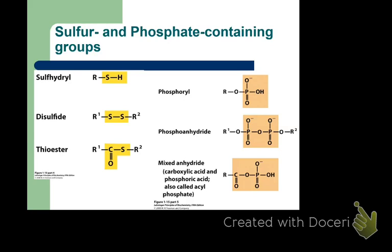Now sulfur and phosphate — a major difference between organic and biochemistry. A thiol is like an alcohol but with sulfur; the prefix 'thi-' indicates sulfur. It's also called sulfhydryl (sulfur with hydrogen). Mercapto is the old term for S-H. Then there's the disulfide.